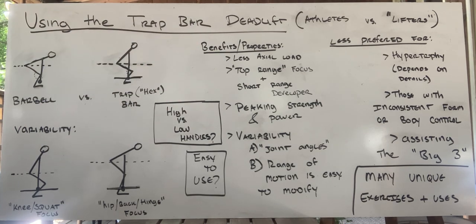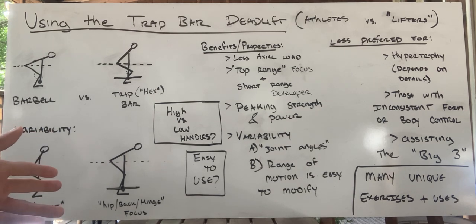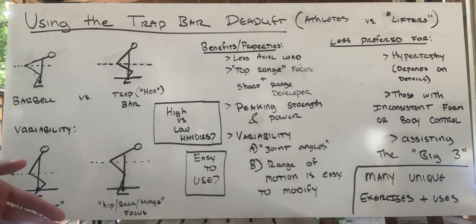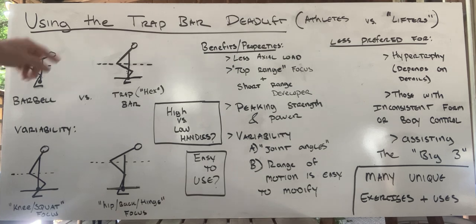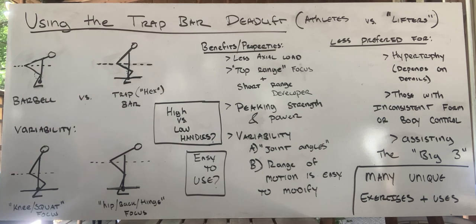One property of the trap bar is less axial load. Because you don't have to bend over as much, you can stand more upright and put less stress on your lower back. Less stress on your lower back isn't necessarily a good or bad thing — you might actually want that stress to get stronger in the posterior chain. But if you're also playing football or wrestling five or six days a week on top of strength training, you might make an informed decision to use the trap bar because the barbell is too stressful at that point in your programming.